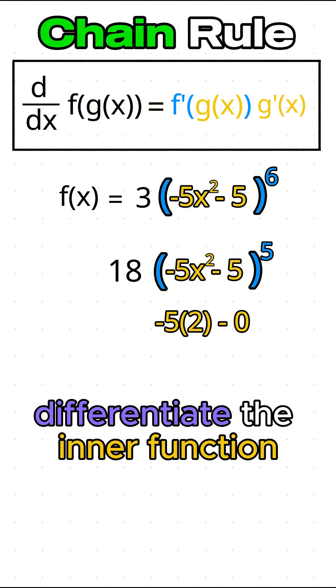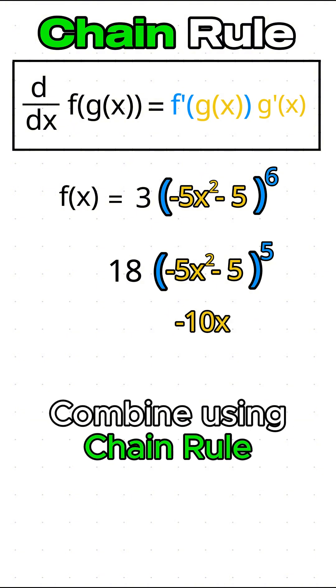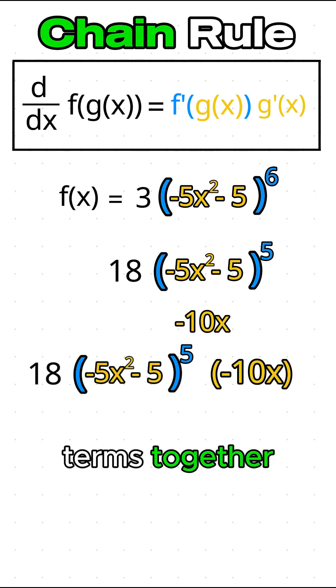Now, we need to differentiate the inner function. Finally, we can combine using the chain rule. The chain rule tells us to multiply these two terms together.